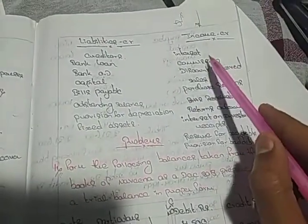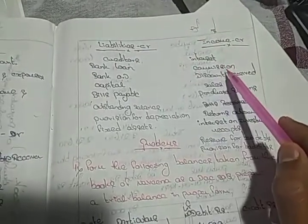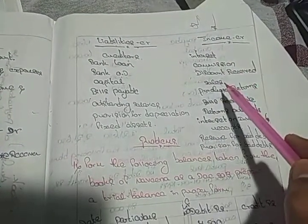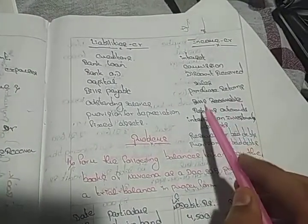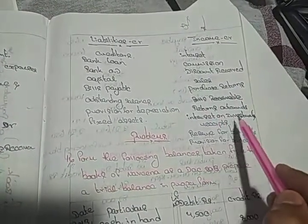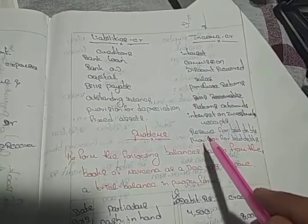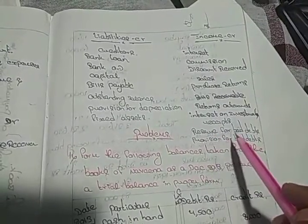Income such as interest received, commission received, discount received, sales, purchase returns, return outward, interest on investment receipt, reserve for bad debits, provision for bad debits. Evening expenses.